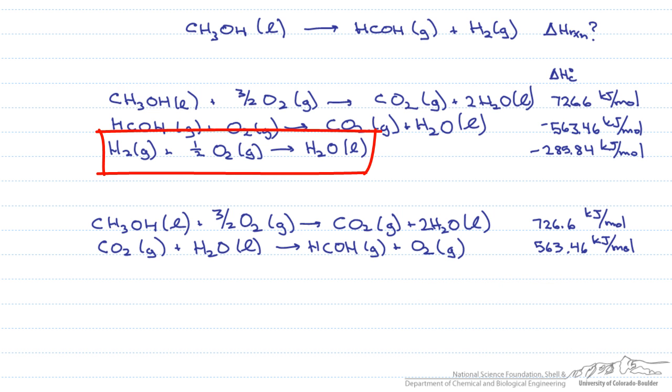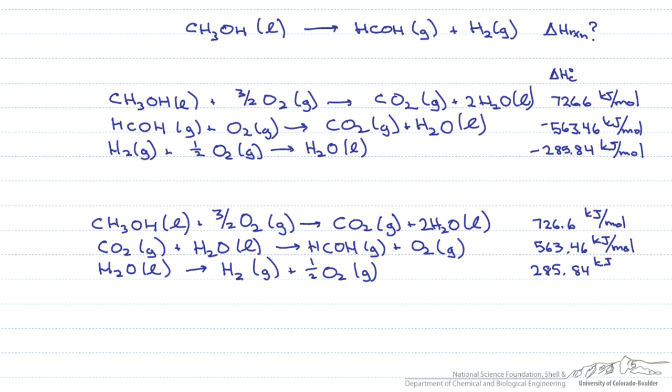And finally, let's look at our third reaction, which is the combustion of hydrogen gas. Again, we need the hydrogen gas to be a product, not the reactant. So we're going to have to reverse the reaction, which means we're going to reverse the sign of our heat of combustion. Therefore, instead of it being negative 285.84 kJ per mole, it's going to be positive 285.84 kJ per mole.